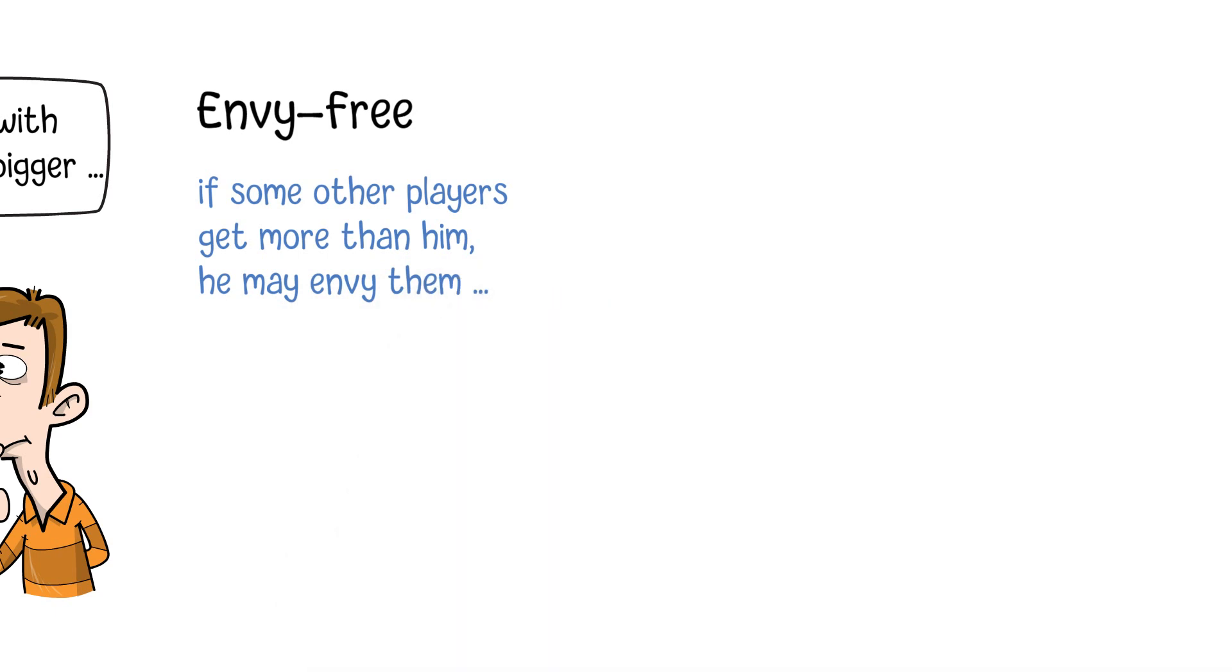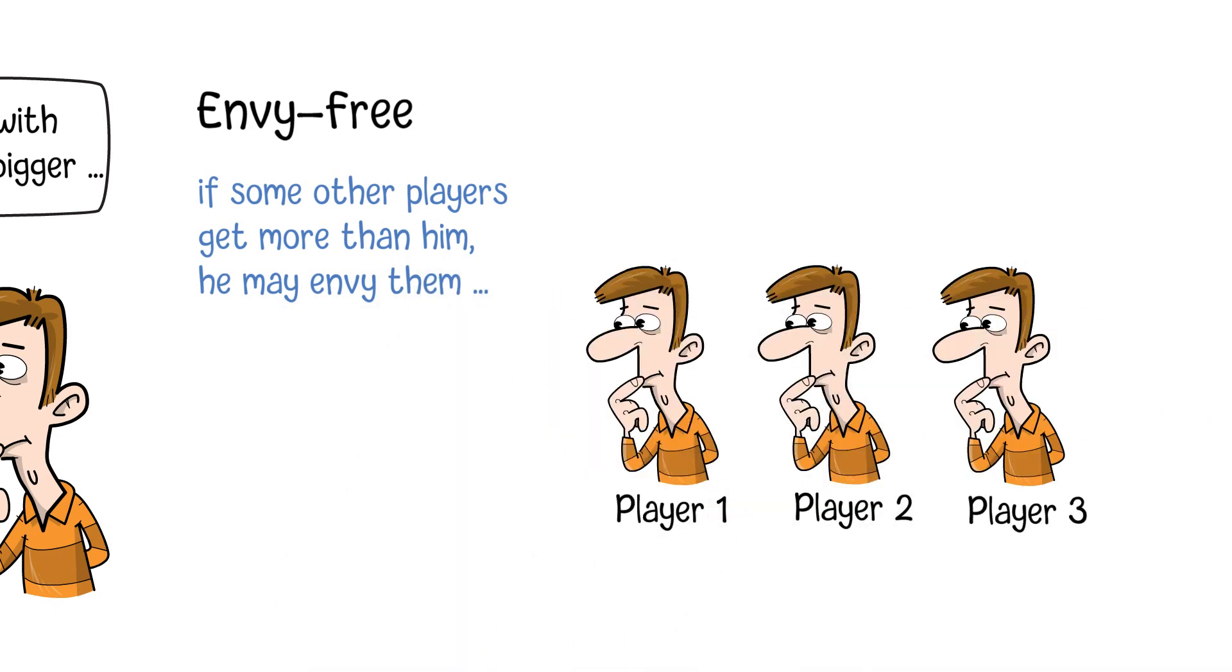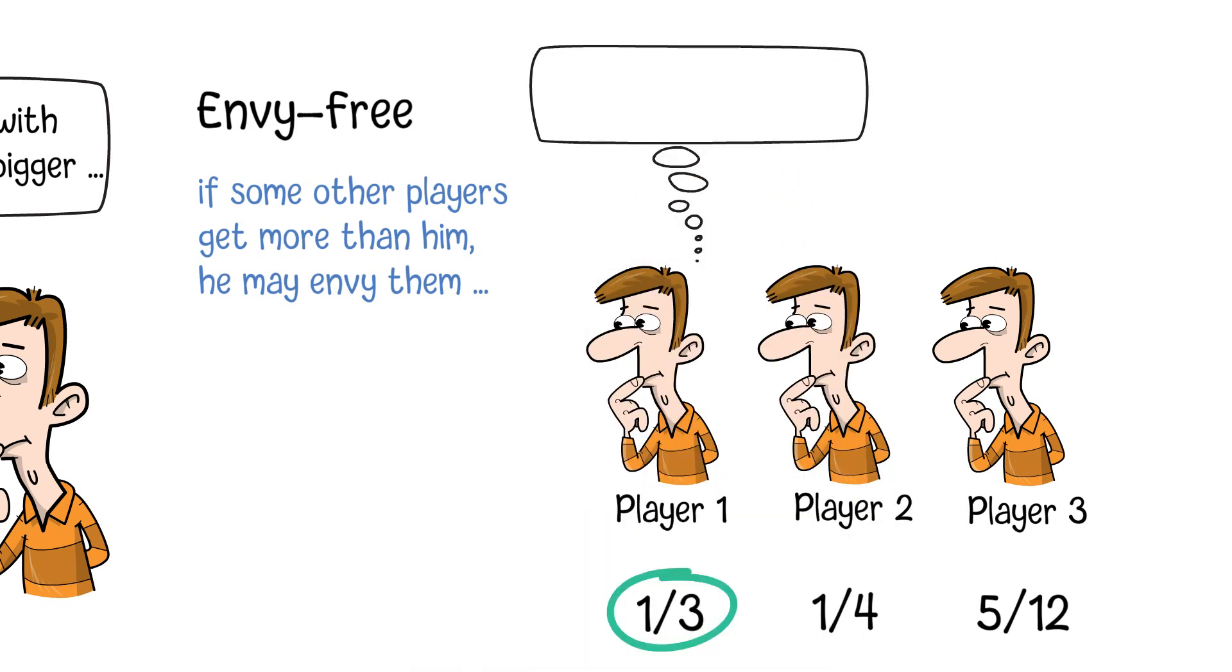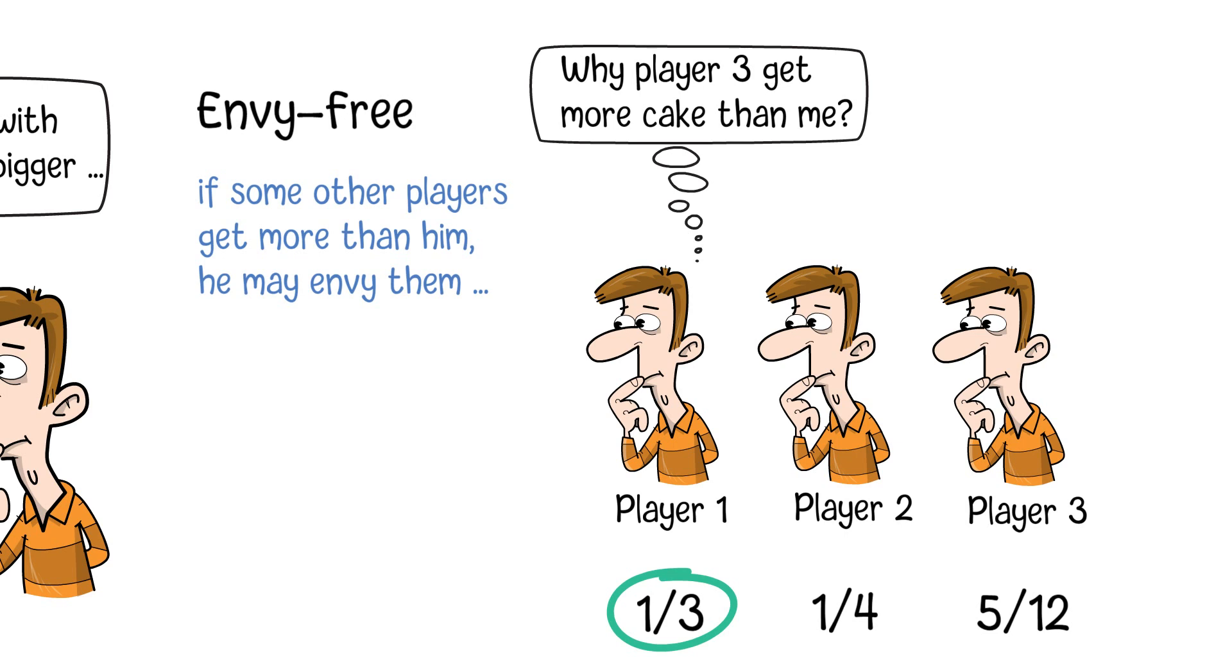For example, if there are three players in the game, and from player 1's perspective, he gets one-third of the total cake and the other two players get one-fourth and 5 over 12 respectively. So, for player 1, although he gets at least one-third of the cake, it is not an envy-free solution because the third player gets more than him.